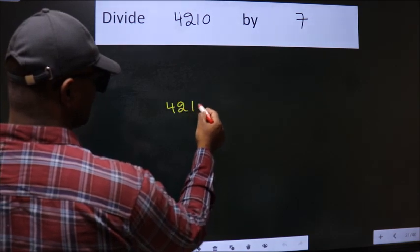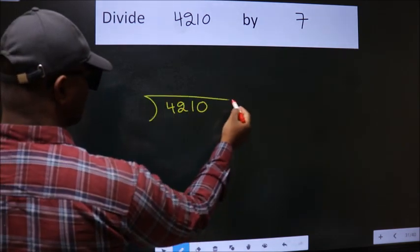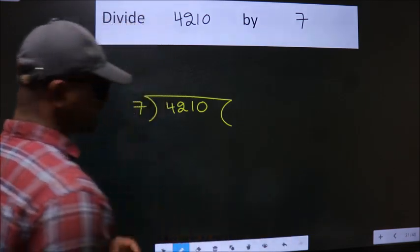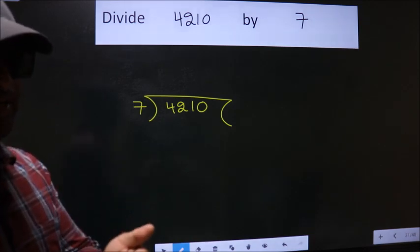4, 2, 1, 0 here. 7 here. This is your step 1. Next.